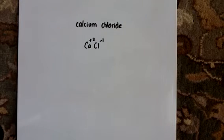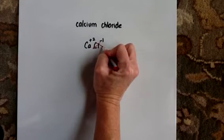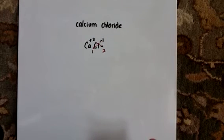The next step is we cross down these charges to get our subscripts. Notice we don't do anything with the plus and the minus. We just bring down the numbers.